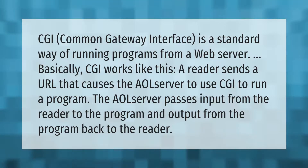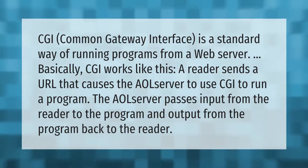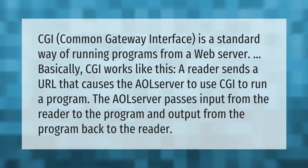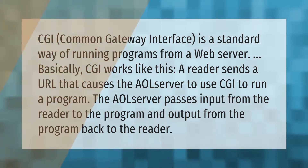CGI, or Common Gateway Interface, is a standard way of running programs from a web server. CGI works like this: a reader sends a URL that causes the AOL server to use CGI to run a program. The AOL server passes input from the reader to the program and output from the program back to the reader.